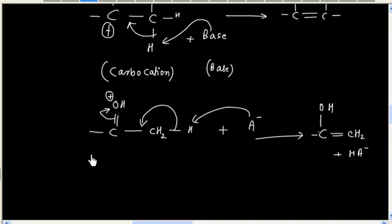So this is keto-enol tautomerism in acidic medium — that is, acid-catalyzed keto-enol tautomerism. In summary: in the first step the keto form gets protonated at the carbonyl oxygen, and in the next step the conjugate base takes a proton from the carbon, generating the enol form.